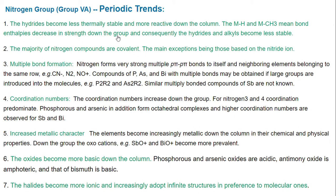While going through the periodic trends of the nitrogen group, that is Group 5A or Group 15, the hydrides we have seen are thermally stable. Most of the nitrogen compounds are covalent and they form multiple bonds. Nitrogen forms strong multiple p–p pi bonds. Compounds of phosphorus, arsenic and bismuth with multiple bonds may be obtained if large groups are introduced into the molecules. Multiple bonded compounds of antimony are not known.